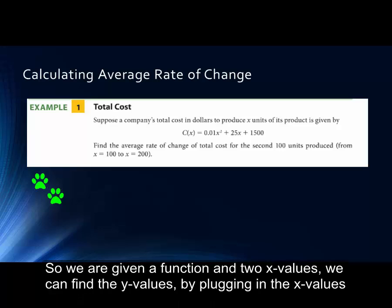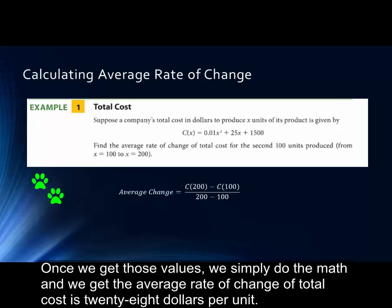Here we are given a function and two x values. We can find the y values by plugging in the x values. Once we get those values, we simply do the math and we get the average rate of change of total cost is equal to $28 per unit.